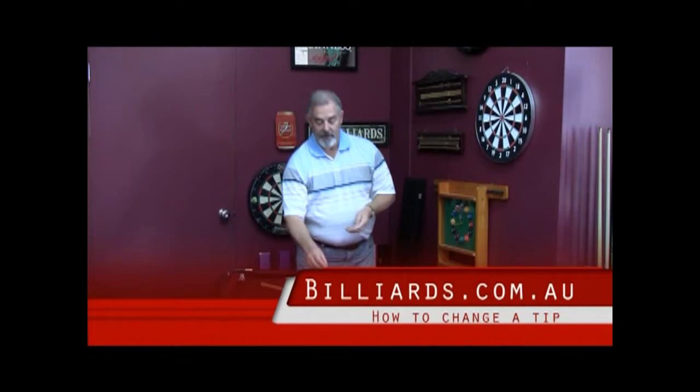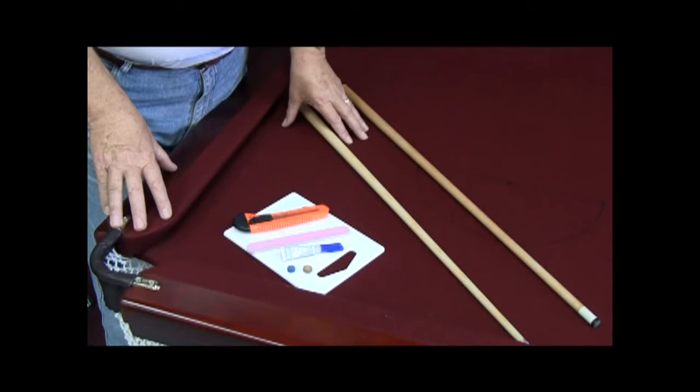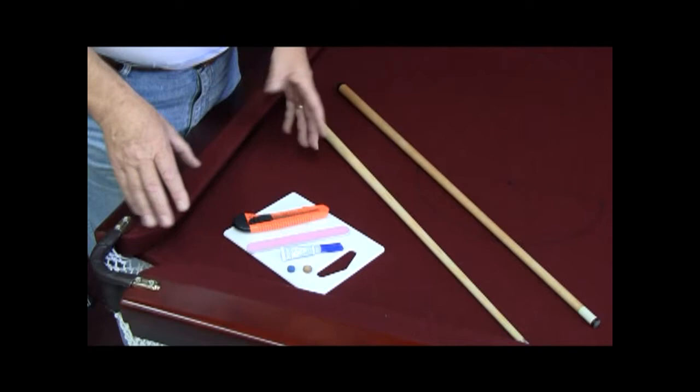This is just some of the equipment that you're going to need, which some of it you'll find even around your own home. I wouldn't suggest that you do the tip maintenance on your own billiard table. Do it on your kitchen bench top or somewhere like that.